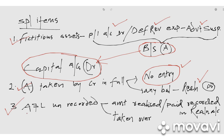Third special item: unrecorded assets and liabilities — already discussed. If it is an unrecorded asset, put the realized amount in the realization account credit side as 'By Cash.' If an unrecorded liability is paid, it goes in the debit side as 'To Cash.' If a partner takes over the asset or assumes the liability, write that partner's name in the debit or credit side respectively.